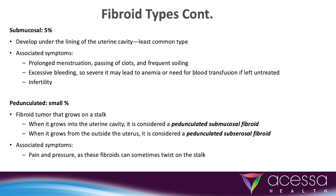A small number of fibroids are categorized as pedunculated. These fibroids are attached to the uterus by a stalk, either within the uterine cavity as a pedunculated submucosal, or on the outside of the uterus as a pedunculated subserosal.